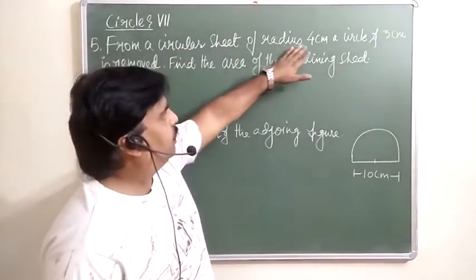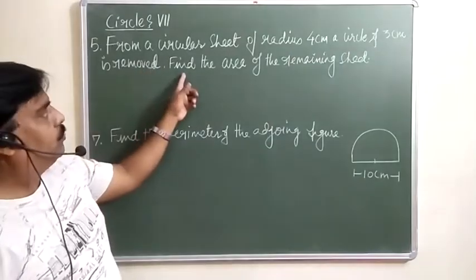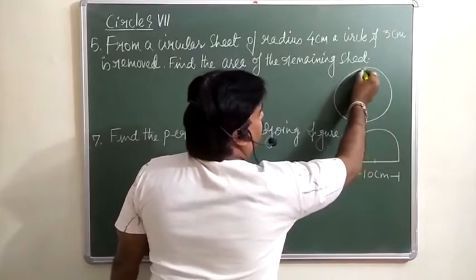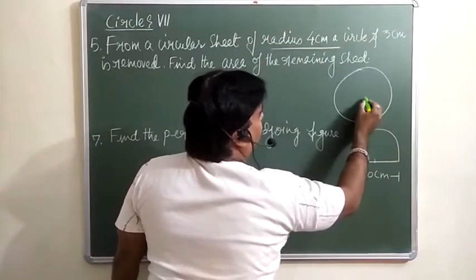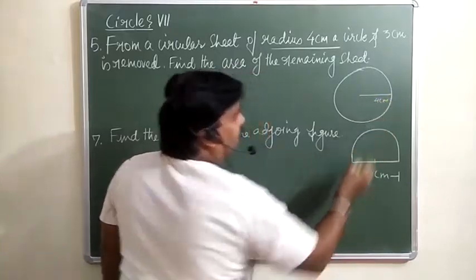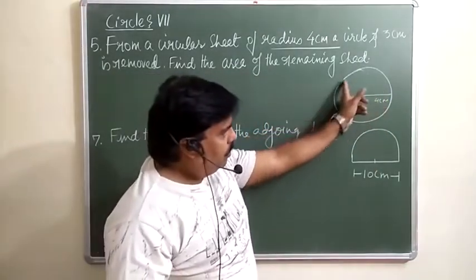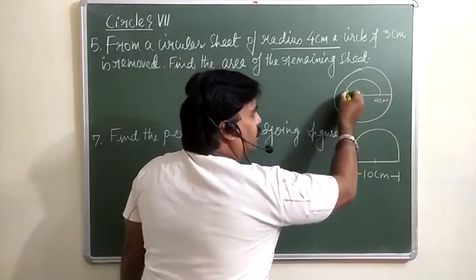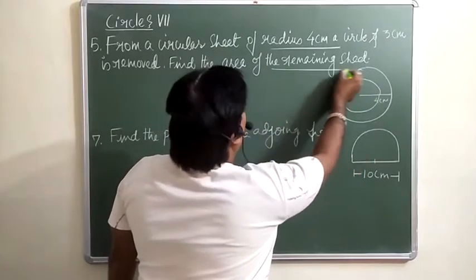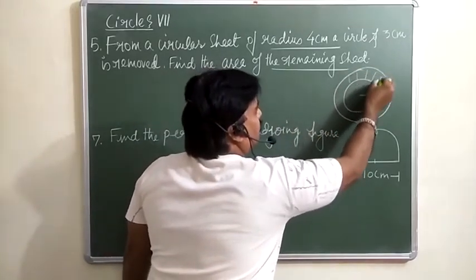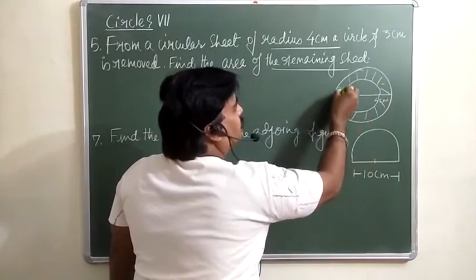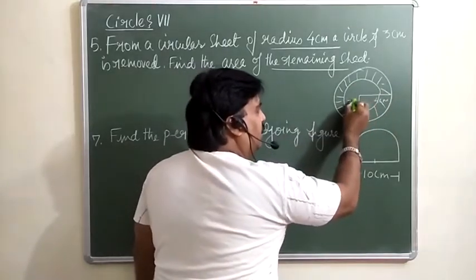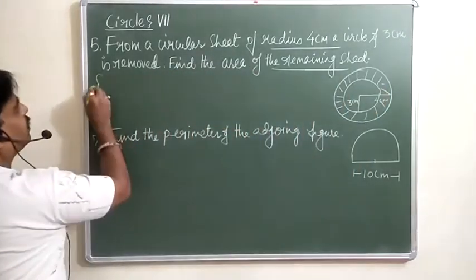A circle of radius 3 cm is removed from a larger circle of radius 4 cm. Find the area of the remaining region. We need to subtract the area of the inner circle from the outer circle to find the remaining area.